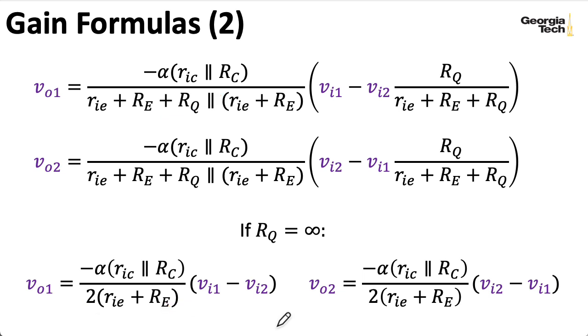So these formulas match what we found in the previous lecture. So if all you cared about was the final result, the previous lecture wasn't technically necessary, but as you can see this was a pretty hairy derivation. So I think there's a lot of pedagogical benefit from seeing the simpler case where we don't have RQ first.